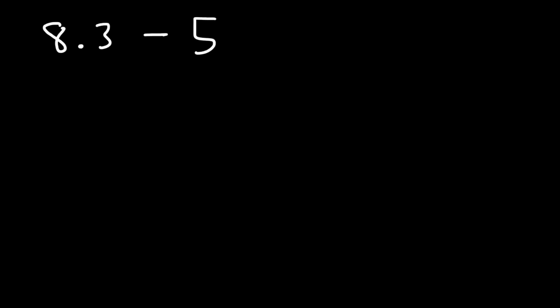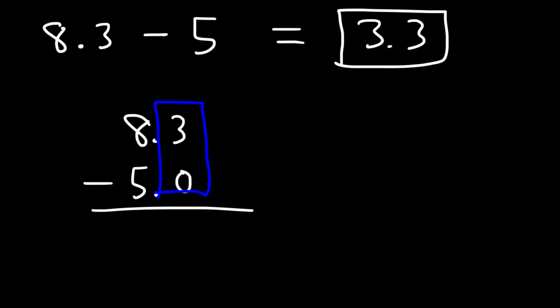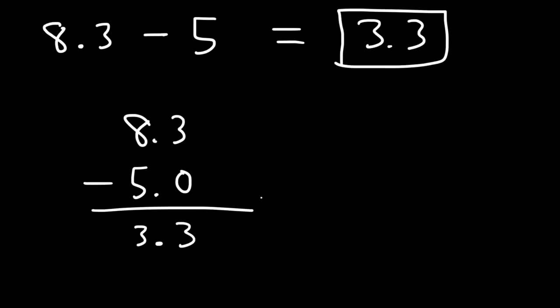Now what about subtracting a decimal number by a whole number? The quick method is to just subtract the whole parts: 8 minus 5 is 3, so the answer is 3.3. If you want to do it the safe way, write 5 as 5.0, then 3 minus 0 is 3 and 8 minus 5 is 3, giving you 3.3. You can apply the same techniques to this type of situation.